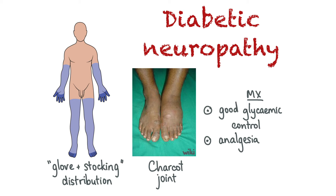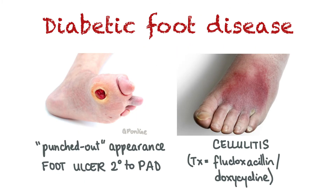Neuropathic pain can be managed using TCAs or anti-epileptics like pregabalin. People with diabetes often get foot infections due to a combination of neuropathy, peripheral artery disease, and increased susceptibility to infections. These infections include infected foot ulcers, cellulitis, abscesses, tendinitis, and septic arthritis. Diabetic foot ulcers have a punched out appearance and occur on the pressure sites of the feet, like the heels.